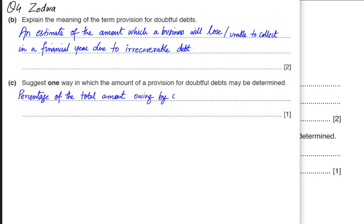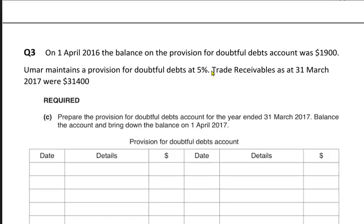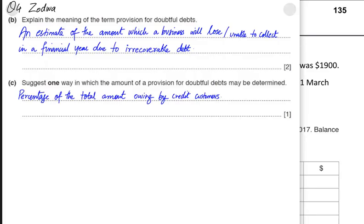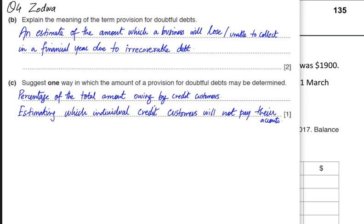First, we can calculate a percentage of the total amount owing by credit customers — we apply a percentage on the total trade receivables, such as the 31,400 with 5% applied. Second, we can estimate which individual customers will not pay their accounts and calculate provision on a debtor-by-debtor basis.